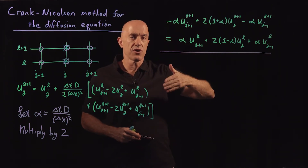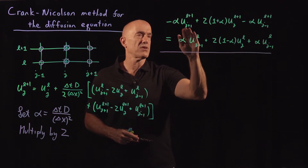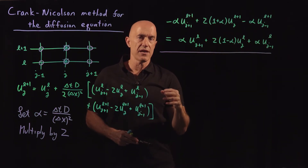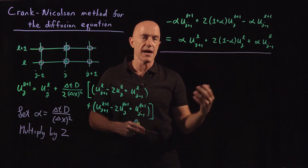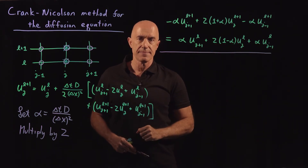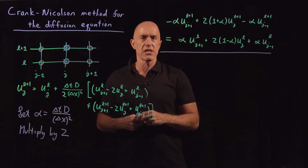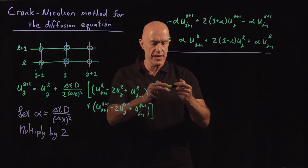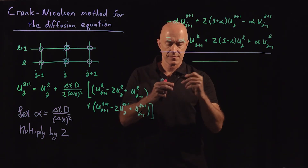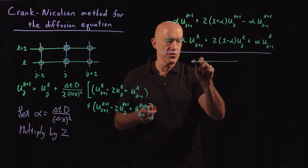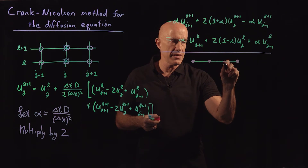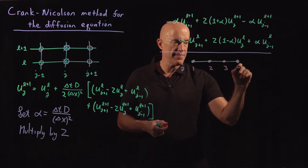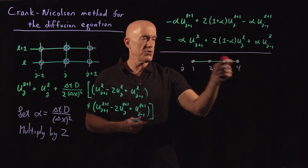You're going to have a matrix A times a column vector. The column vector on the left-hand side will be U at the L plus 1 time step, and the right-hand side will be a column vector of U at the L time step. To see this most clearly, let's write a matrix for the case of just four grid points: j equals 1, 2, 3, and 4 — two interior points and two boundary points.